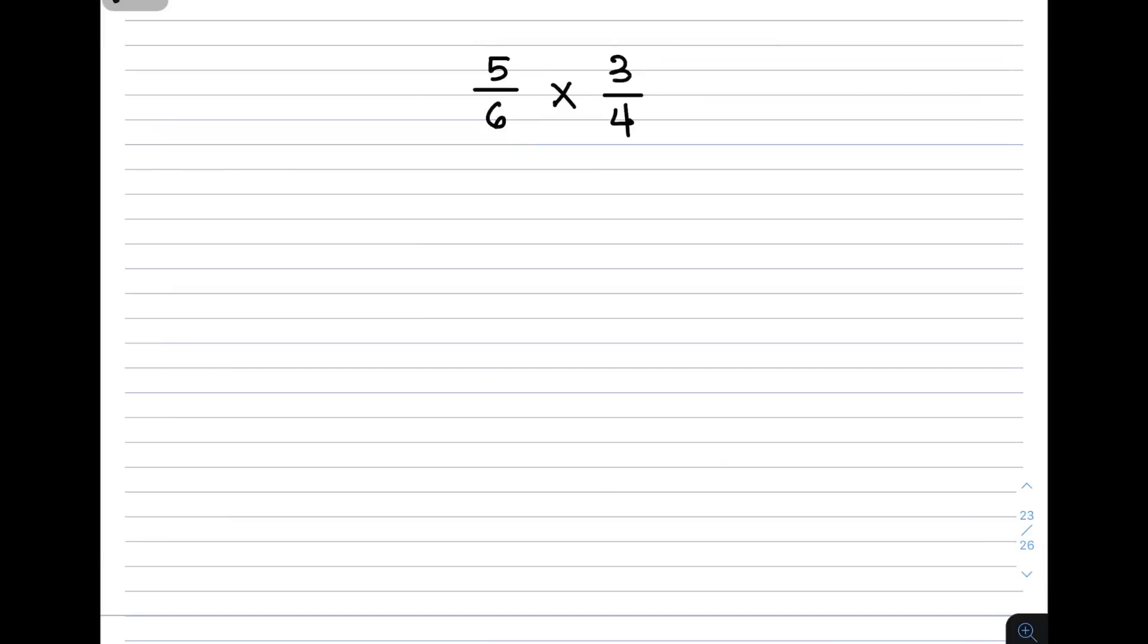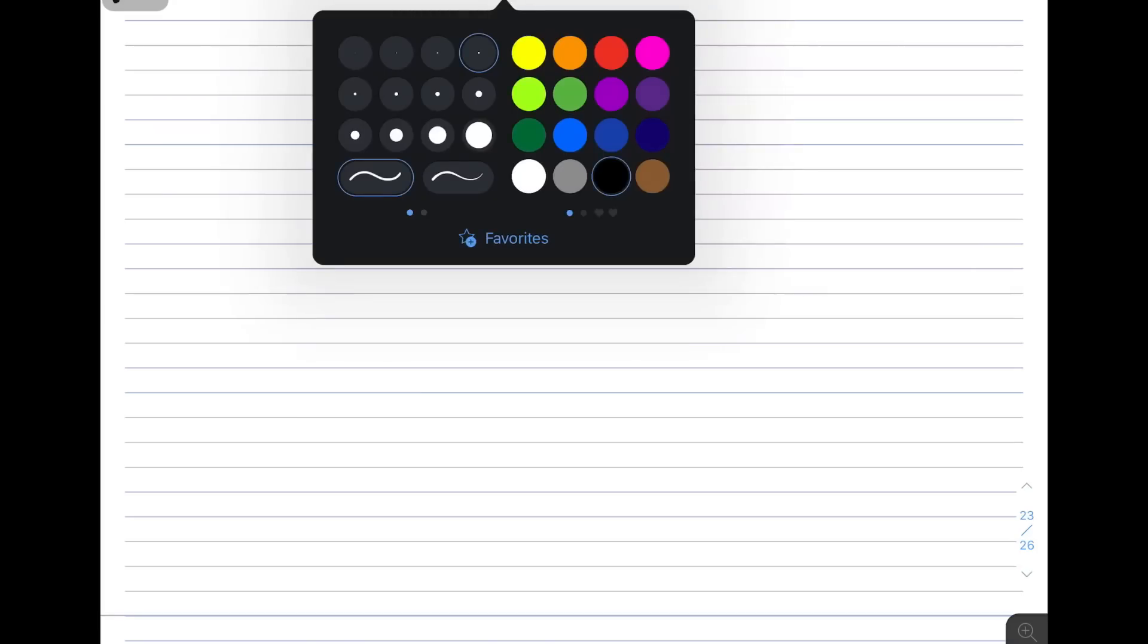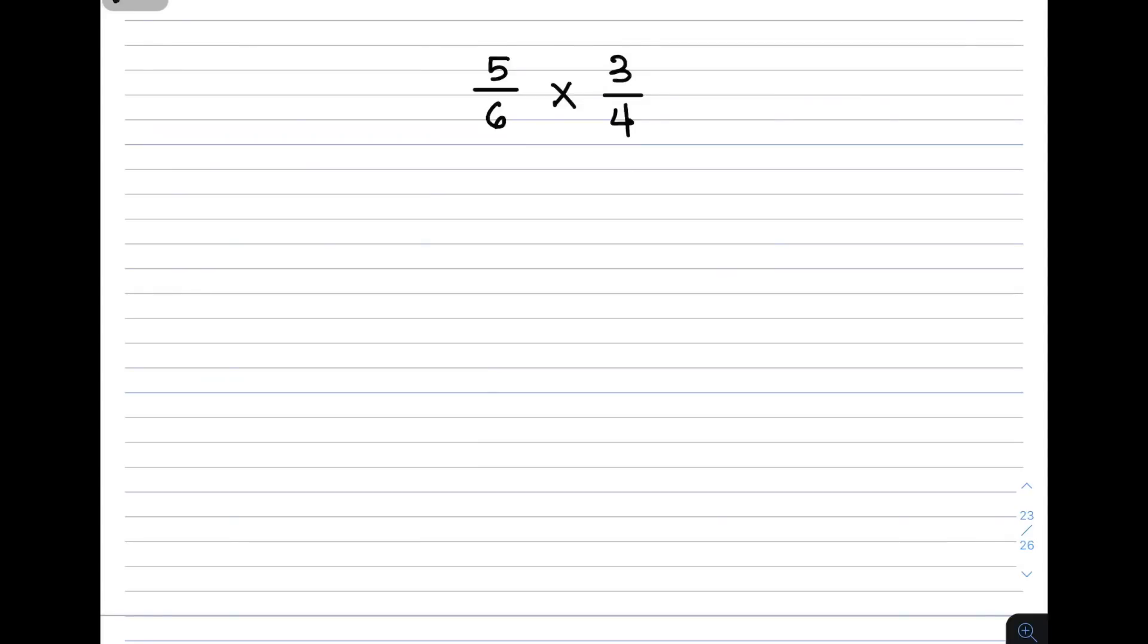We have here example number 1. By the way, I have 4 different examples, and at the end of this video, I will allow you to apply what you have learned. So we have 5 over 6 times 3 over 4. First thing I need to do is show you the conventional way on how to do multiplying fractions.